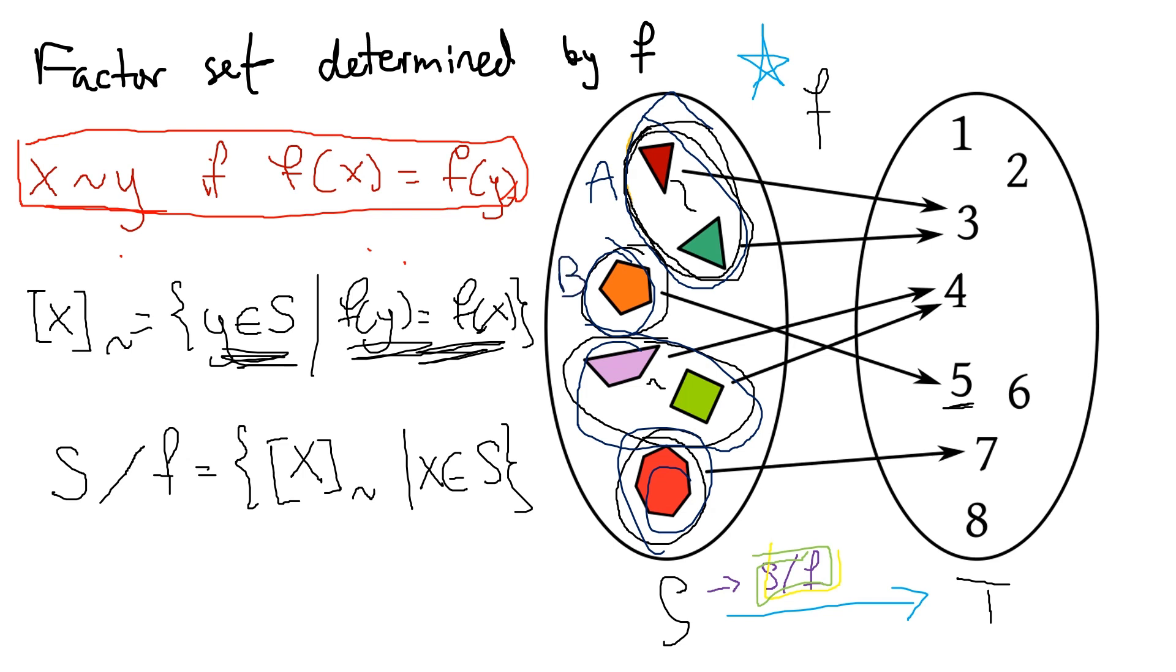So if I call this first blob A, second blob B, and then I keep going C and D, then in this case, X mod F would be literally the collections A, B, C, and D.